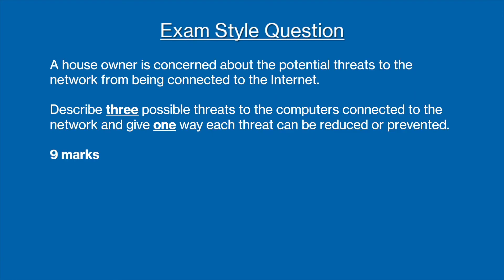Now that we have been through all the prevention methods, let's try and apply this to an exam style question. A house owner is concerned about the potential threats to the network from being connected to the internet. Describe three possible threats to the computers connected to the network and give one way each threat can be reduced or prevented. This question is nine marks and asks you for three situations, so you want to be making three points for each: naming the threat, describing the threat, and naming a method of prevention.